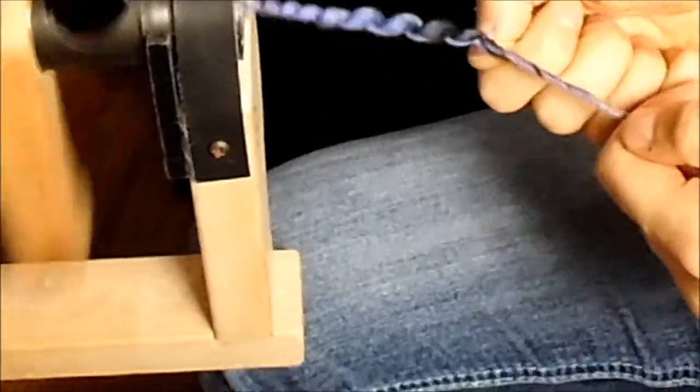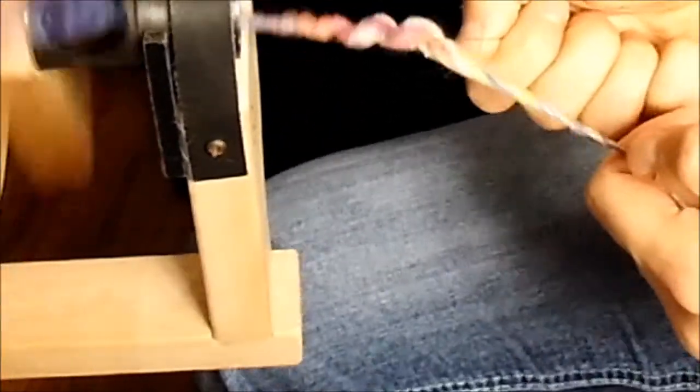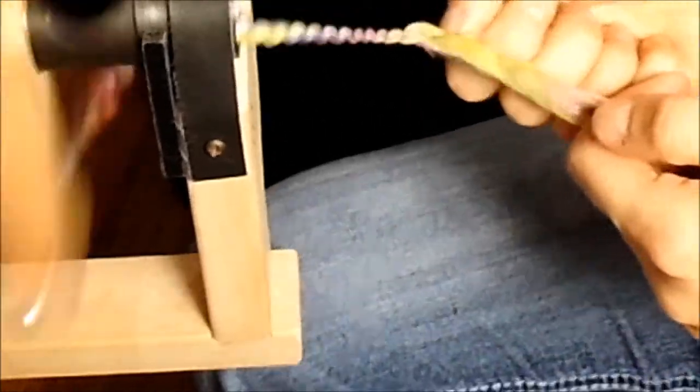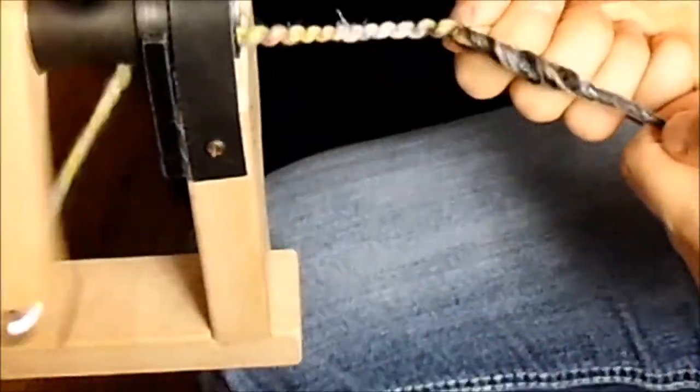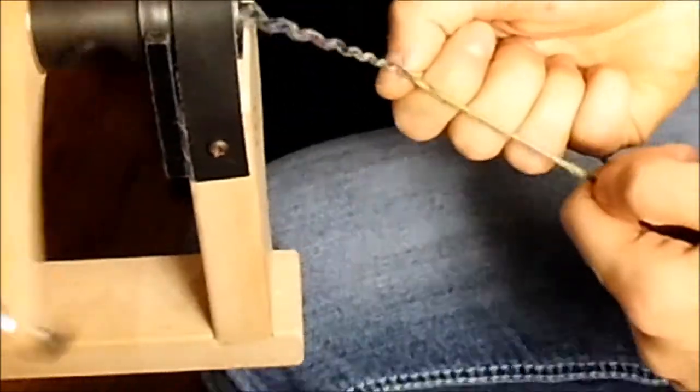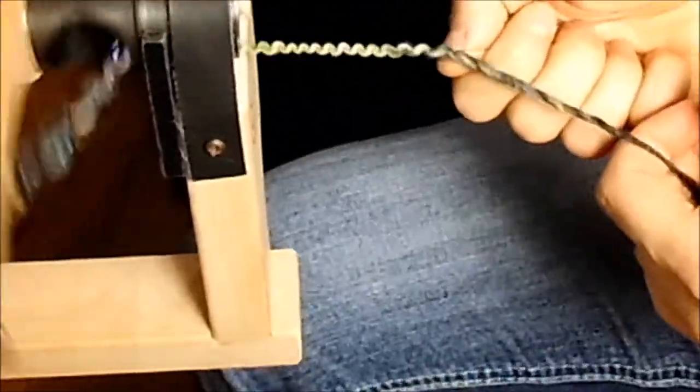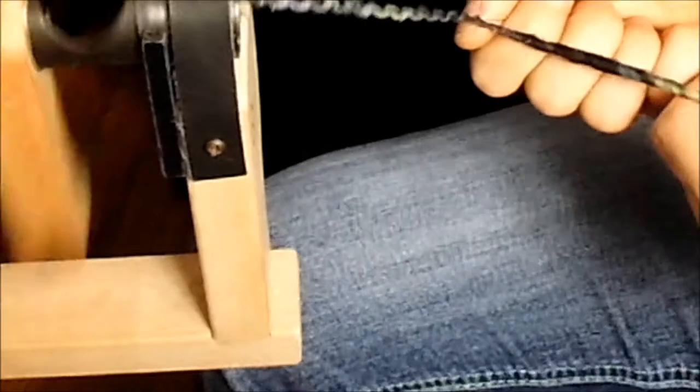We're using a simple polyester thread to ply our yarn and to put the spirals into our yarn. The way that I'm holding the yarn isn't necessary. There's many different ways to hold your yarn when you're plying.